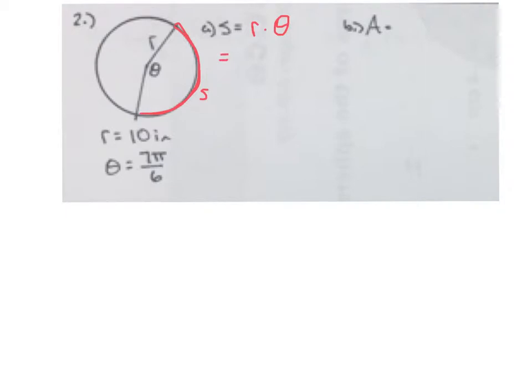So here our radius is 10 inches, and our radians is 7 pi over 6, so that's going to be 70 pi over 6. And if we type that into our calculator and let it calculate, we should get 36.651.